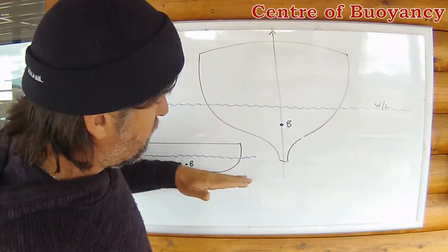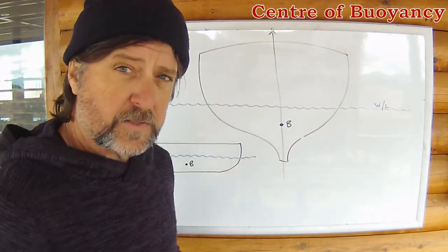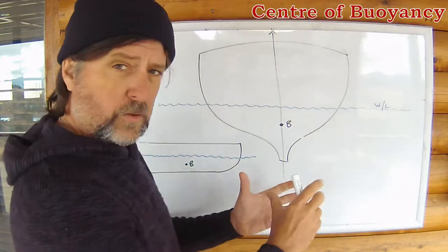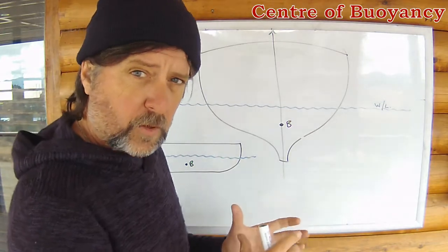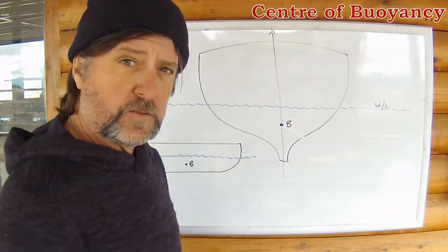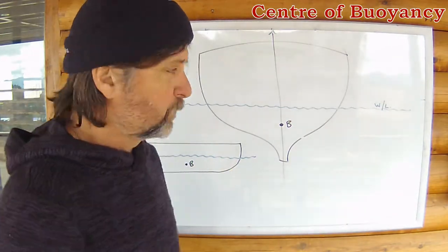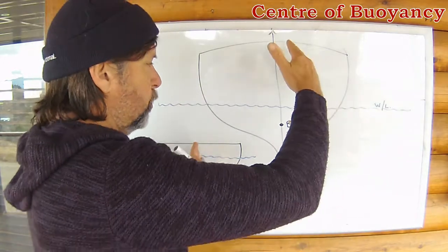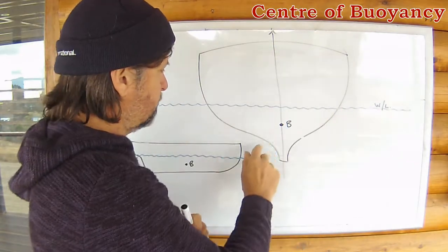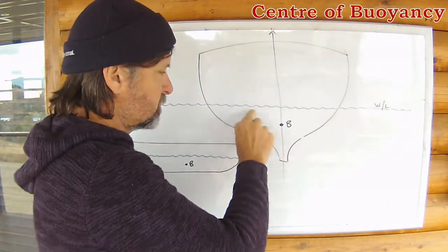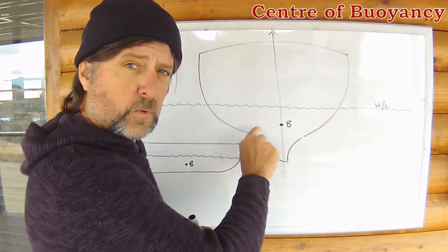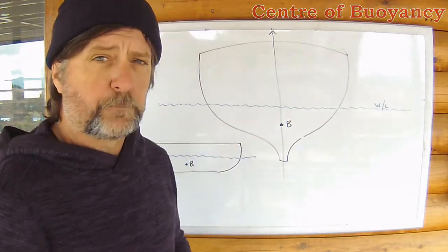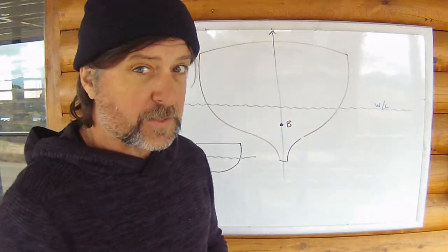If the vessel goes a little bit bow down in the water, the underwater volume — the bulk of the volume — shifts forward, so B must shift forward with it. As the vessel rolls to port, as viewed from aft, we can see that there's going to be more underwater volume on the port side, so B will move out. It's pretty busy.